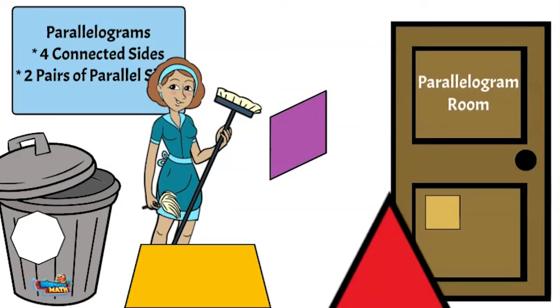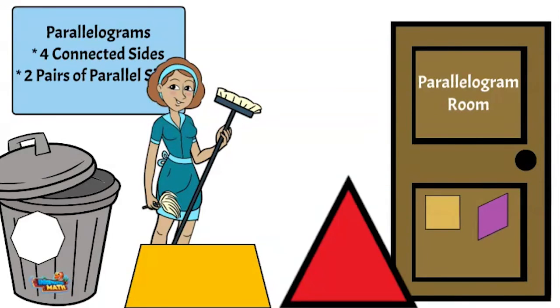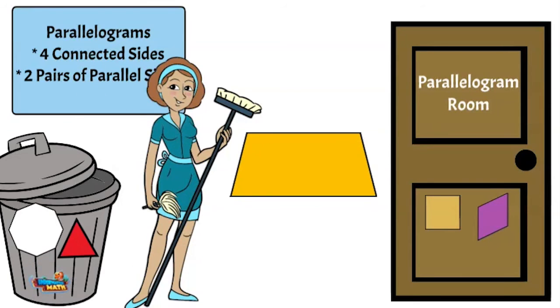Here is a rhombus. Four connected sides and two pairs of parallel sides. He can go in. Here is a triangle. Only three sides. He doesn't fit.